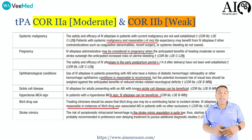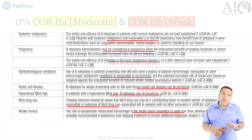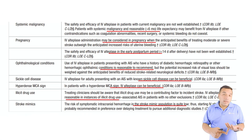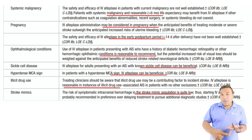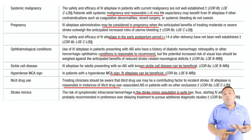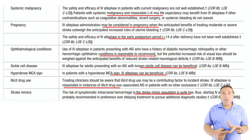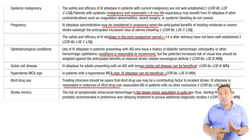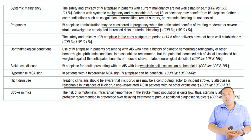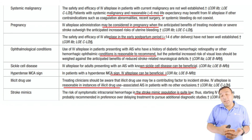Systemic malignancy: if the patient has a life expectancy of more than six months, consider giving TPA. Pregnancy is not a contraindication, but you need to be very cautious. The postpartum period within the last 14 days is not well established — these are all weaker recommendations, but you should consider giving TPA.